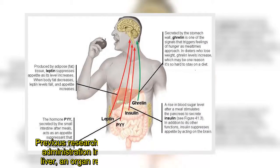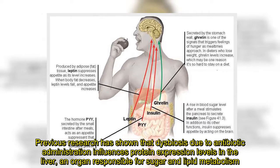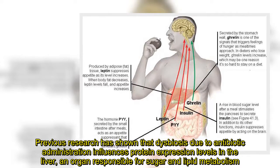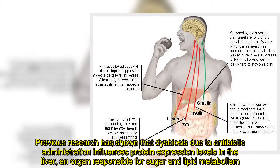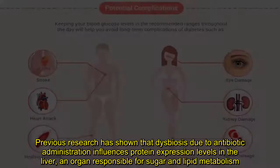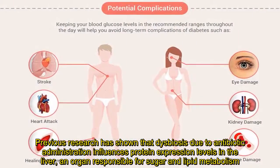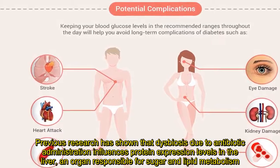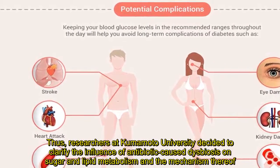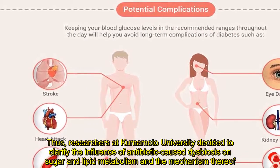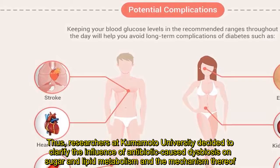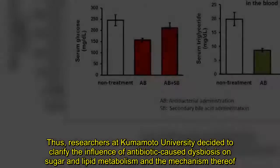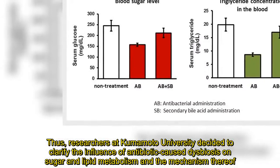Previous research has shown that dysbiosis due to antibiotic administration influences protein expression levels in the liver, an organ responsible for sugar and lipid metabolism. Thus, researchers at Kumamoto University decided to clarify the influence of antibiotic-caused dysbiosis on sugar and lipid metabolism and the mechanism thereof.